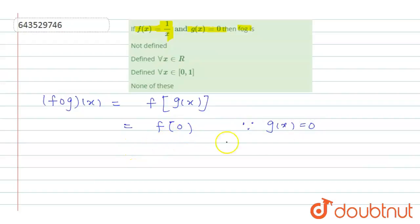So f of 0... since f(x) equals 1 by x, then f of 0 is not defined.